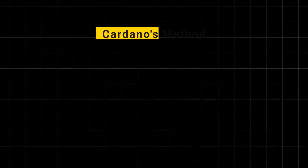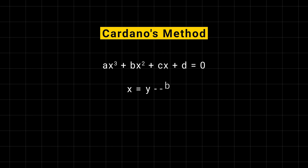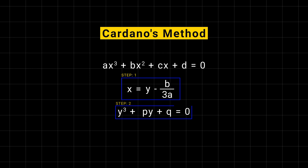Now let's move on to Cardano's method. This method is more sophisticated and can handle any cubic equation. It involves substituting a new variable to simplify the equation into a depressed cubic. Here is a quick overview.